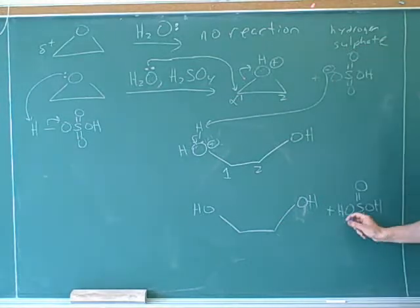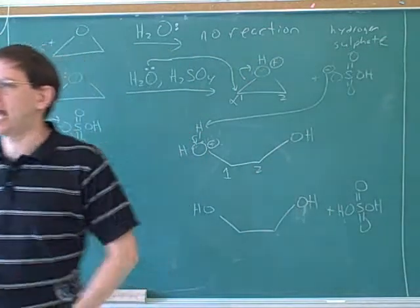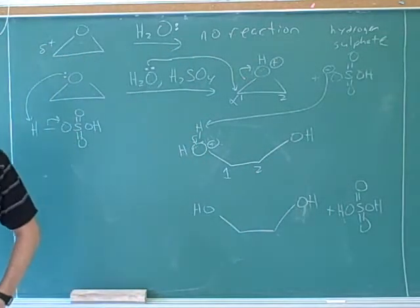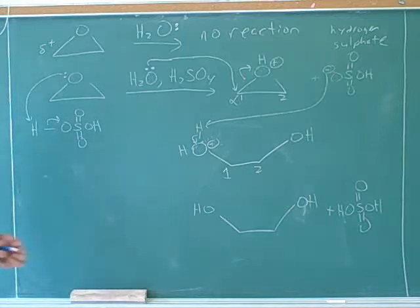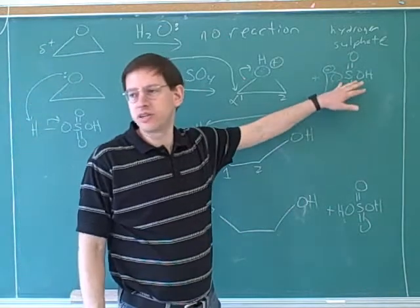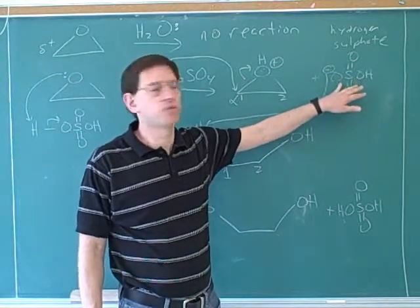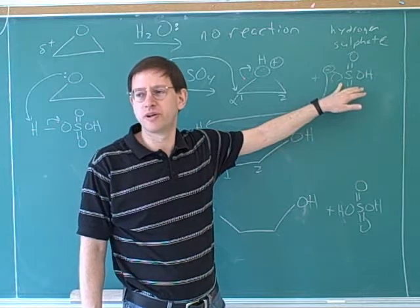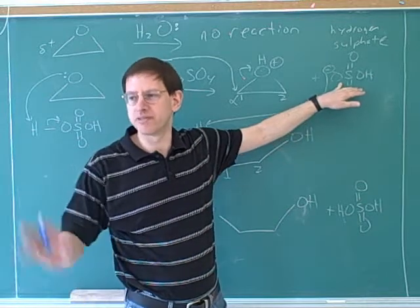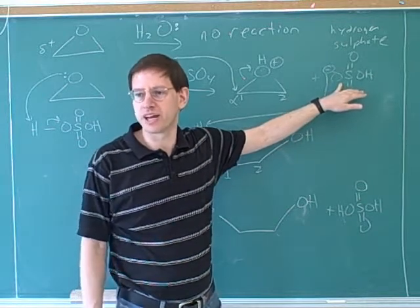And now we've got back our sulfuric acid. The sulfuric acid here turned out just to be a catalyst, because we regenerated it at the end. Oftentimes sulfuric acid is used as a catalyst. Why is sulfuric acid such a useful catalyst? Because the hydrogen sulfate is not nucleophilic, so we don't need to worry about it competing in our reactions. It just donates a proton and then doesn't interfere with the rest of the reaction.